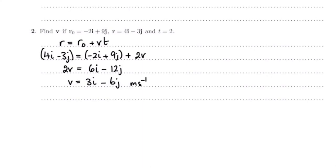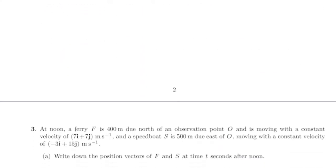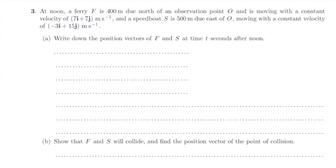Now we can also do some problem solving questions with these. Let's have a look at this question. Question 3 says: at noon a ferry F is 400 meters due north of an observation point and is moving with a constant velocity of 7i plus 7j meters per second. A speedboat S is 500 meters due east of O, moving with a constant velocity of minus 3i plus 15j meters per second. Write the position vectors of F and S at time t after noon.